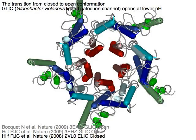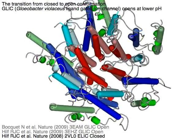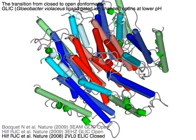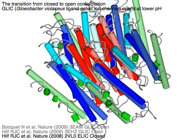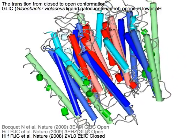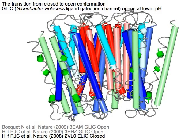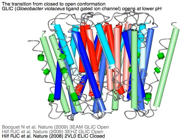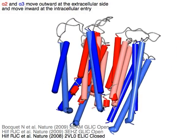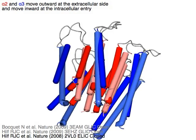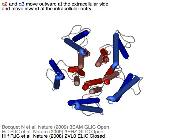The transition from closed in primary colors to open conformation in light colors. Gloeobacter violaceus ligand-gated ion channel opens at lower pH. Red alpha-2 and blue alpha-3 move outward at the extracellular side and move inward at the intracellular entry.